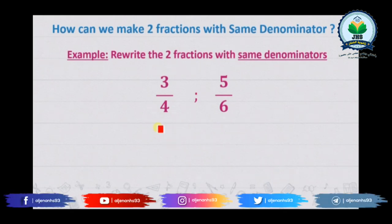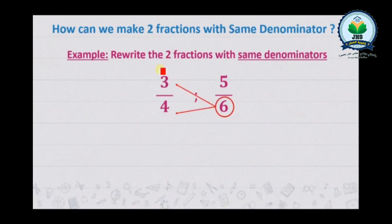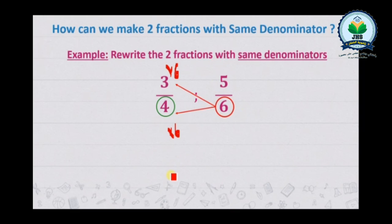How can we make these two fractions with the same denominator? Focus with me. We multiply the first fraction by the denominator of the second fraction — so we multiply three over four by six. Then we multiply the second fraction by the denominator of the first fraction — so we multiply five over six by four. We obtain 24 and 24 — the same denominator.